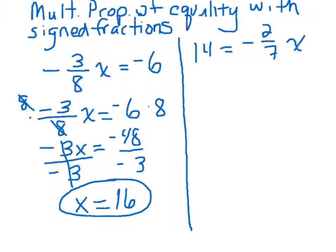So let's do another example. We have 14 equals negative two sevenths x. Again, we have a wishy-washy negative sign. Let's take care of that right away. All right.